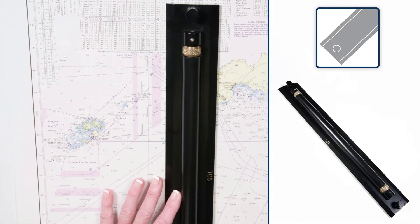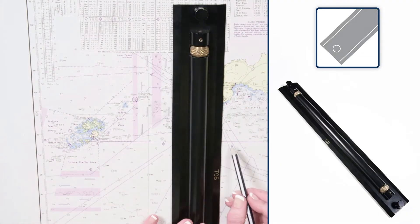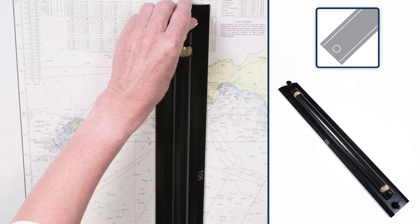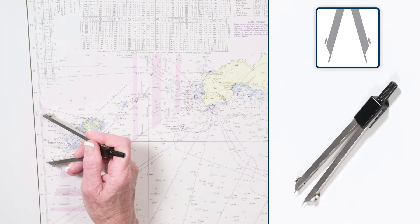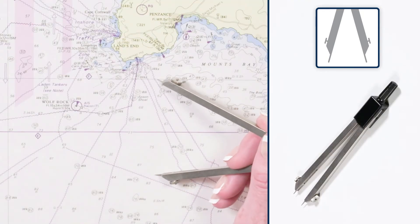Rolling and stepping rules can be used to plot chart updates from textual NMs. Bow dividers are more sensitive for accurate positioning.